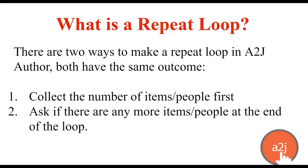There are two ways to make repeat loops in A2J Author, and both have the same outcome. You can either collect the number of times the end user has to go through the loop first — let them tell you up front how many times they need to go through the loop. Or you can ask them if there are any more at the end of the loop — do you have any more of whatever — and let them say at the end of the series of questions whether they want to enter the loop again or not.